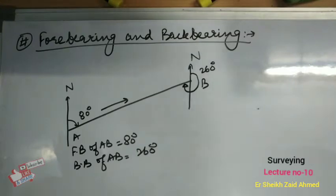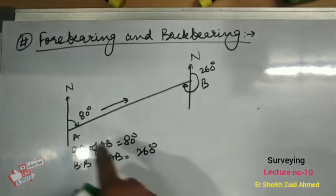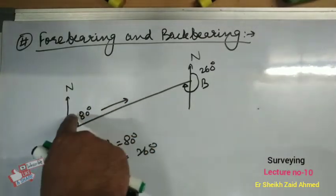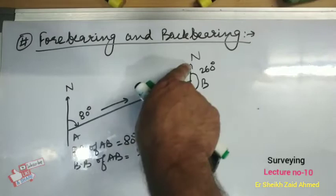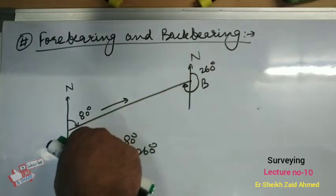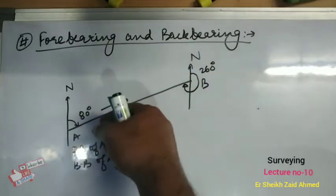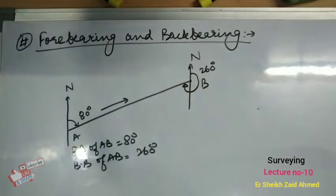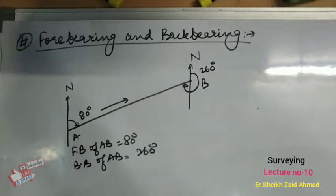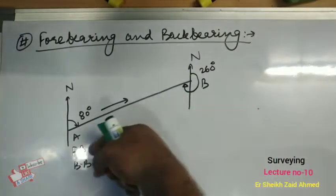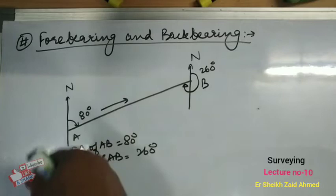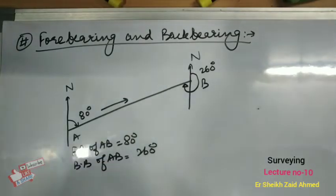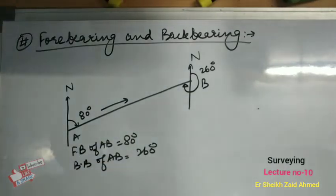The bearing of line AB measured from A towards the forward station B is called the forebearing of line AB, assuming that the progress of survey is from A to B. The bearing of line AB measured from B towards the rear station A is called the backbearing or reverse bearing of line AB. So the forebearing of AB is 80 degrees and the backbearing of AB is 260 degrees.